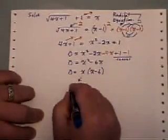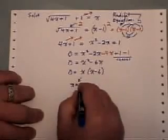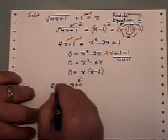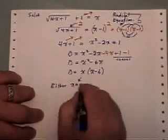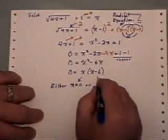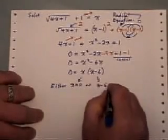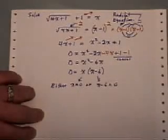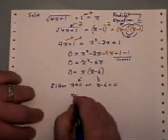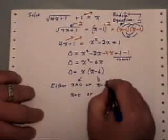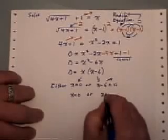Therefore, you get two answers to your equation. Either x is 0, or x minus 6 is 0. So either x is 0, or when I take the minus 6 to the other side, x equals 6.